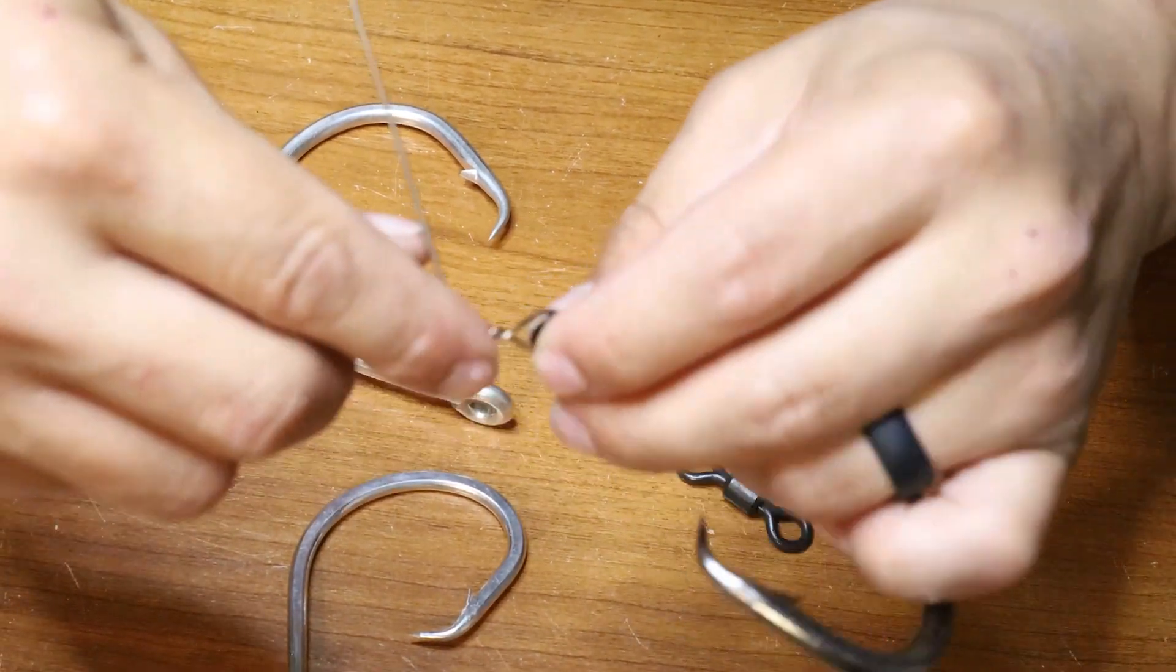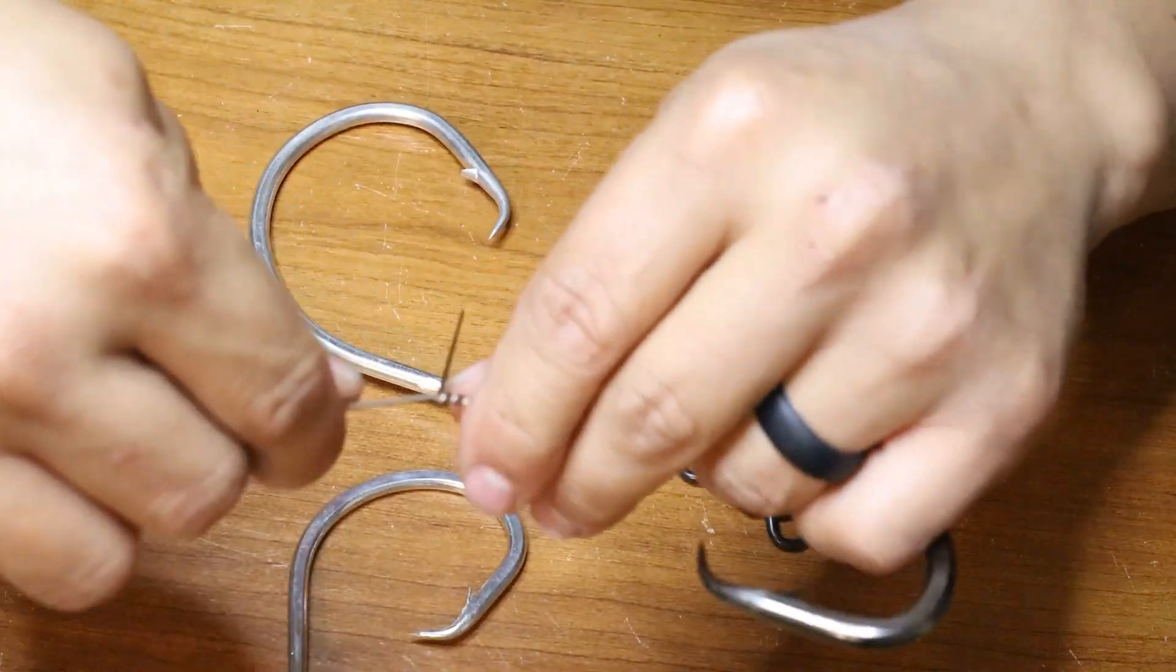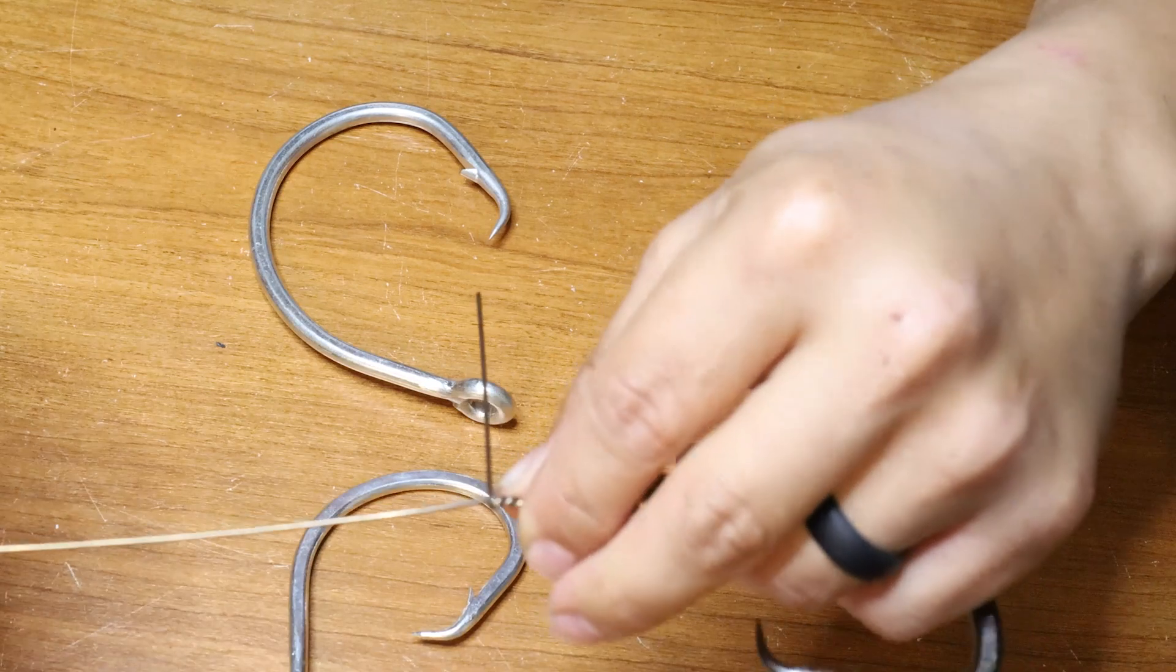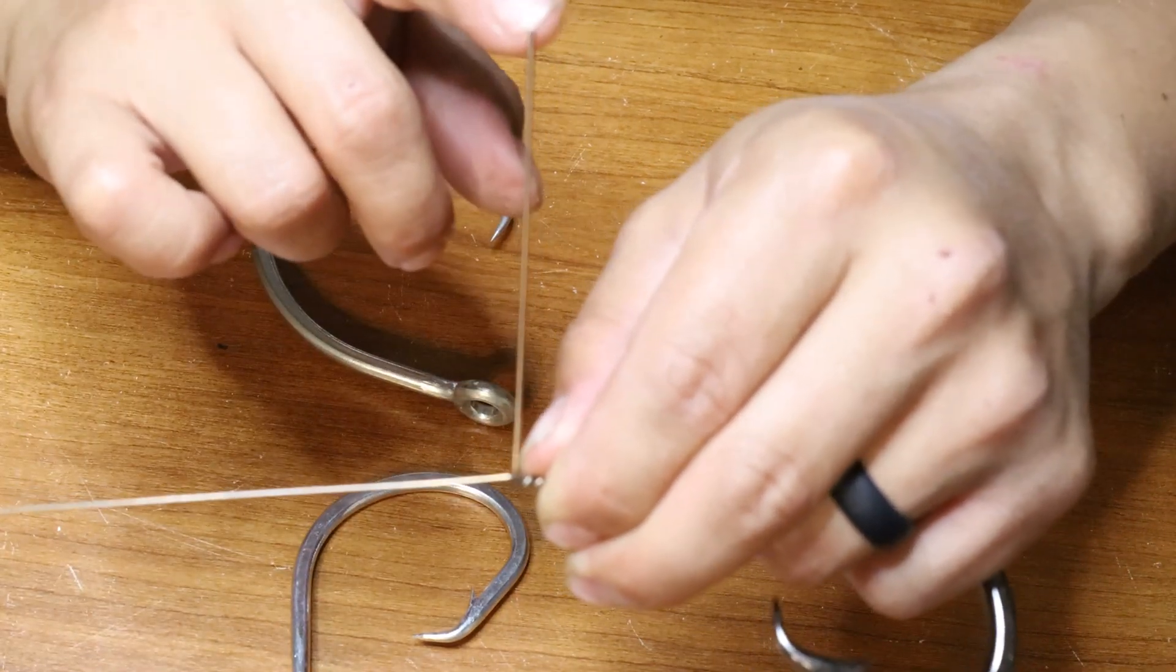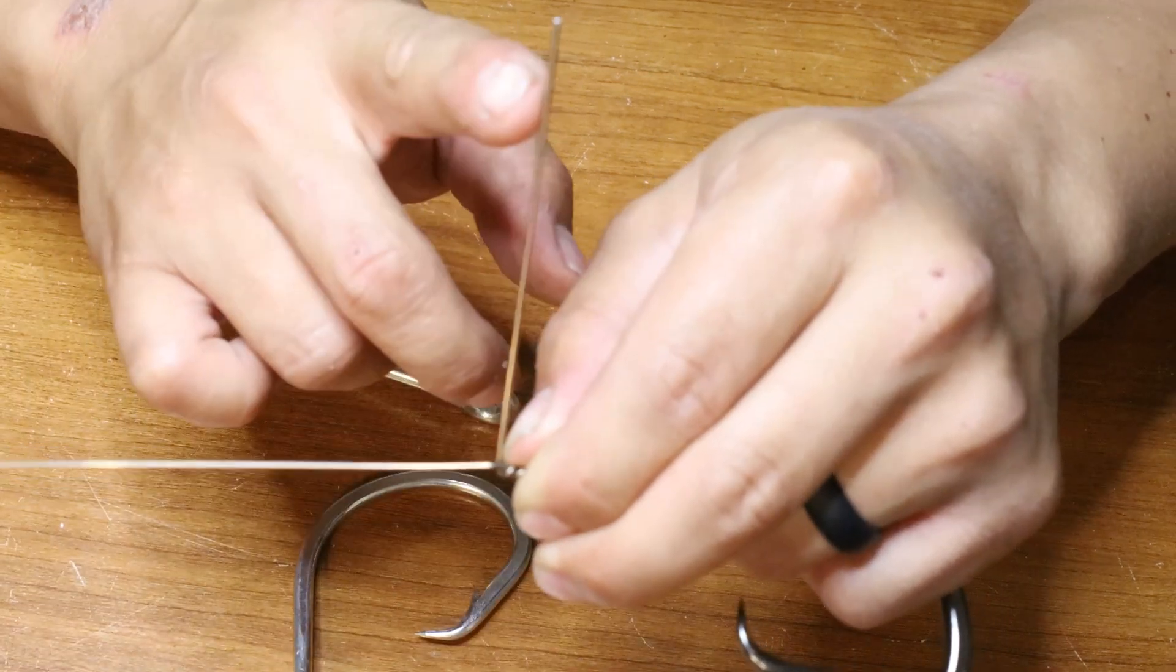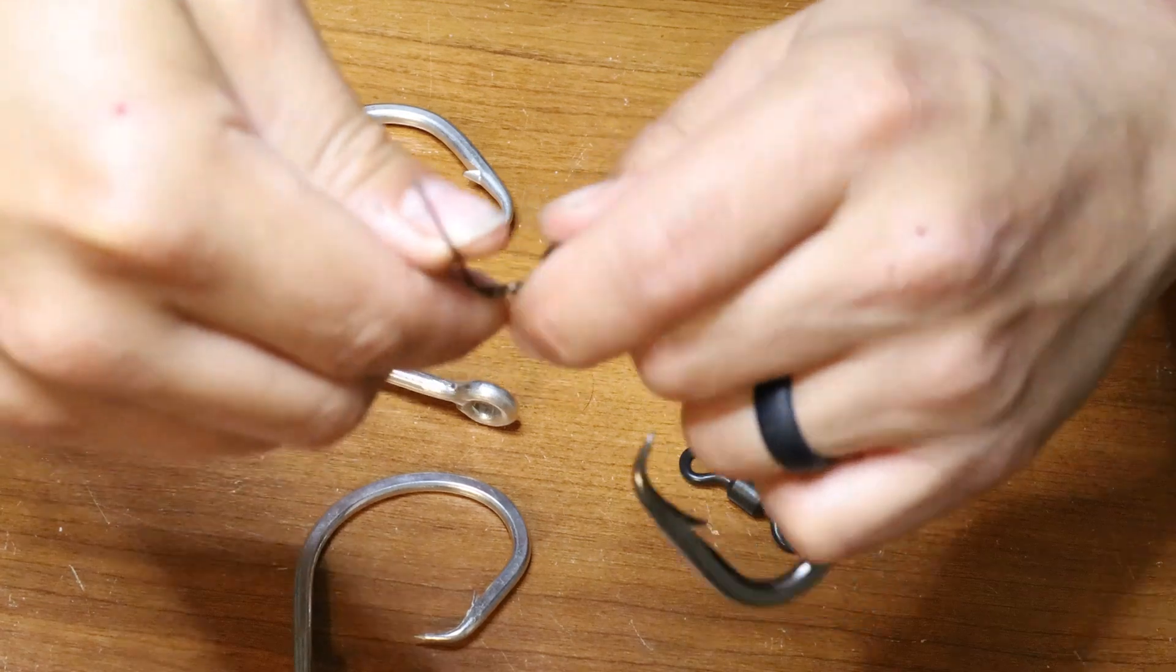Once you're done with that, you can take your tag end and bend it 90 degrees. What I mean by 90 degrees is from your main wire to the tag end, you kind of want a right angle - 90 degrees. That's what you do with it.